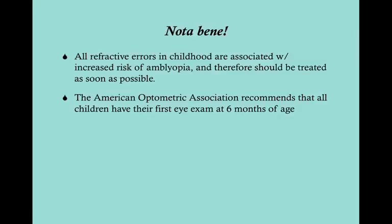These are important facts for both clinical practice and the test. All refractive errors in childhood - basically any visual deficit - lead to an increased risk of amblyopia, which is a permanent deficit. That's why it's extremely important that all of these are treated as quickly as they are diagnosed. The American Optometric Association recommends that all children have their first eye examination at six months of age - much younger than you'd expect, and younger than the first dental exam.